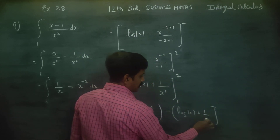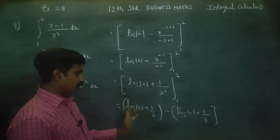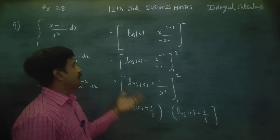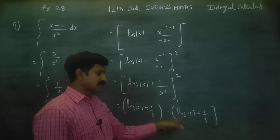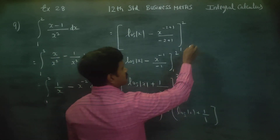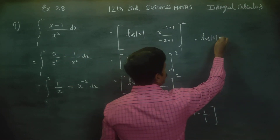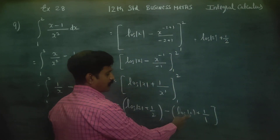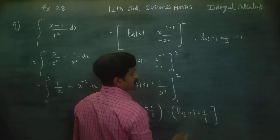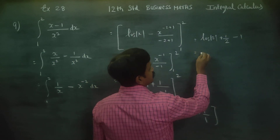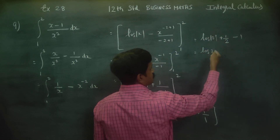Since 1 power 1 is 1, and applying upper limit minus lower limit: the answer is log 2 plus 1 by 2, minus log 1 minus 1. Since log 1 is 0, this simplifies. The answer will be logarithm of 2, which is a positive number, minus one-half. Therefore, the final answer is log 2 minus 1 by 2.